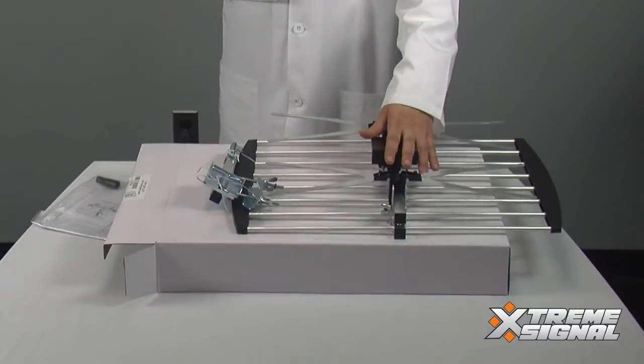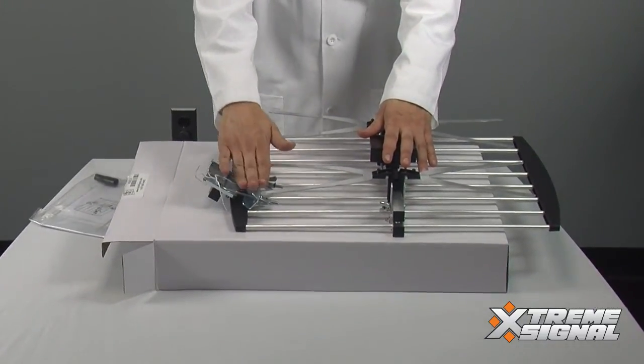Okay, so what we have here is the 2-bay bowtie antenna, the mounting clamp, and the mounting bracket.